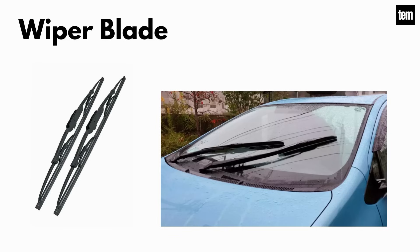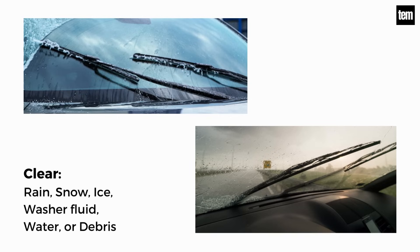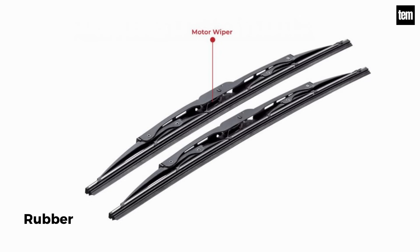Wiper blade. Almost all vehicles including cars, trucks, and buses have wiper blades, which are very important for the clear vision of the driver. These devices are used to clear rain, snow, ice, washer fluid, water, or debris from a vehicle's front window so the driver can see what lies ahead. They are made of rubber that degrades and becomes less effective over time.